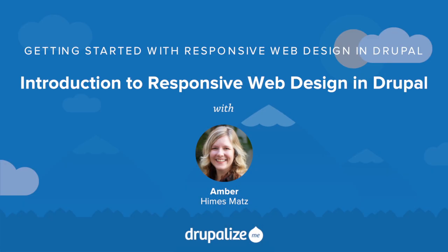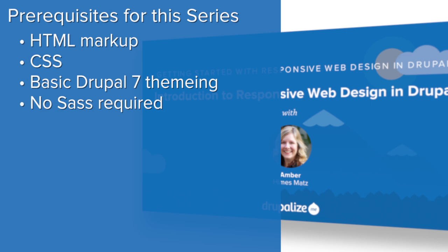In the process of converting this theme to be responsive, you'll learn to tackle some real-world, sometimes messy, and oftentimes not so clear-cut problems and potential solutions. To take advantage of this series, you'll want to be comfortable with HTML and CSS and the basics of setting up a theme in Drupal 7. You don't need to know Sass or any advanced theming. This series will help you understand common problems encountered in responsive web design and how to solve them in the context of a Drupal 7 theme using CSS. So come on, let's get started with responsive web design in Drupal.